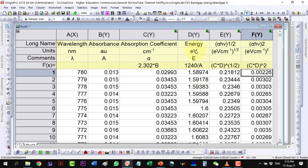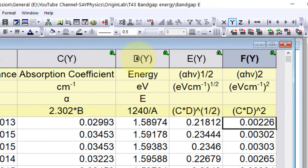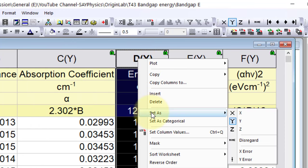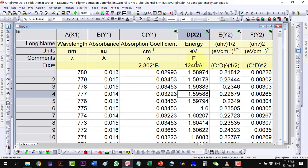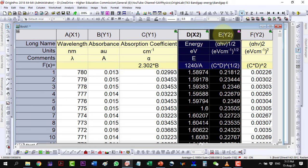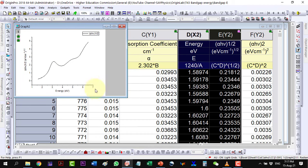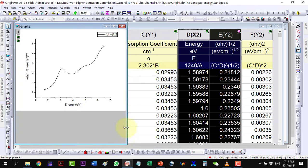Let us set the energy column as the X column. Plot first these two columns and then the next column to check which of them is giving the best fit for the extrapolation to the X axis.